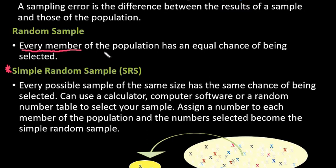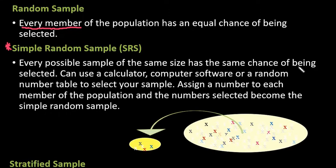So that's the key difference between random sample and simple random sample. A simple random sample is talking about every possible sample of the same size has the same chance of being selected. So if I were to select 50 students from the school that I teach at, I could randomly get the same 50 students again a second time, but it's not very likely to happen depending upon the size of the population, but it could happen.